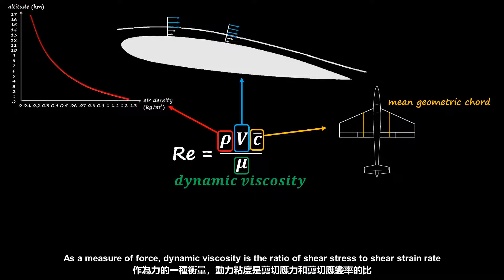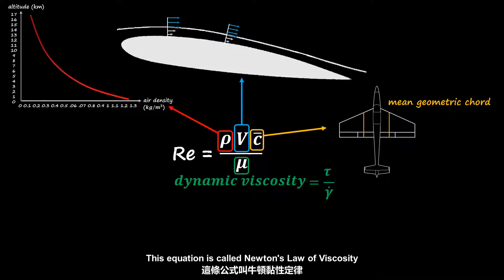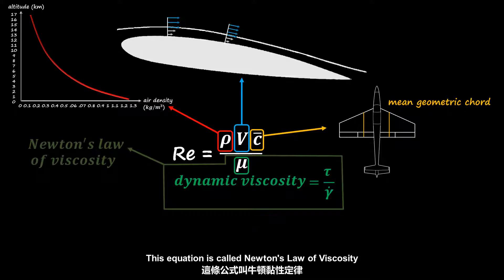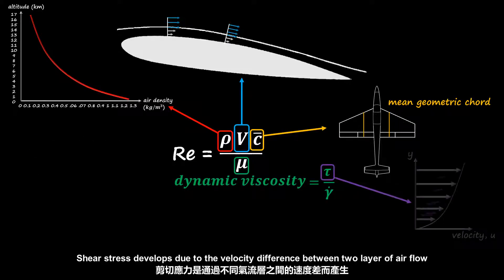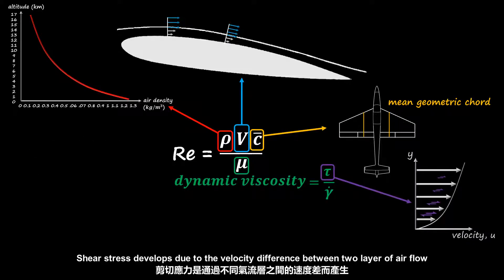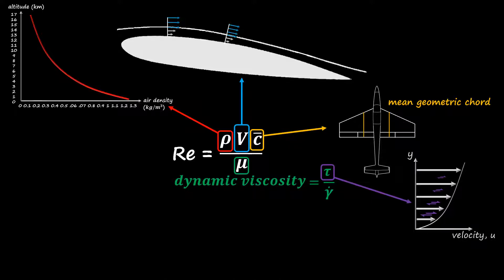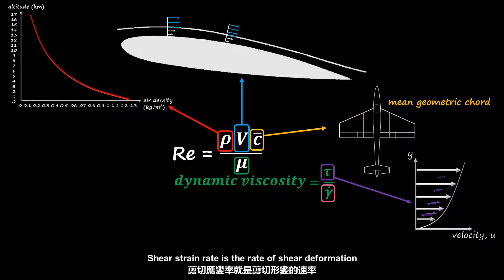As a measure of force, dynamic viscosity is a ratio of shear stress to shear strain rate. This equation is called Newton's law of viscosity. Shear stress develops due to the velocity difference between two layers of air flow. Shear strain rate is the rate of shear deformation, which can be calculated through the slope of the velocity profile.